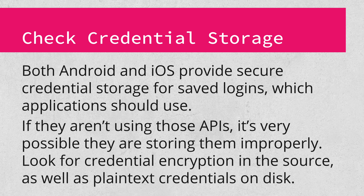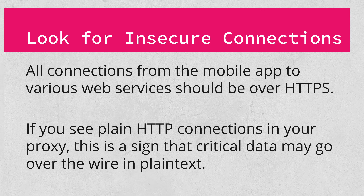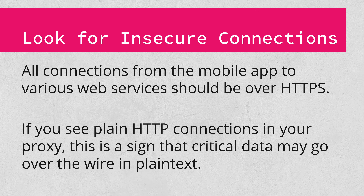Next, check to see how credentials are stored. If it's possible to save credentials used to talk to a server, the application should be using the system APIs — Keychain on iOS and Smart Lock on Android — to store those securely. Often these will either be stored on the file system in plain text or poorly encrypted. Also look for insecure connections. Essentially all connections from the mobile app to web services should be via HTTPS. If you see plain HTTP connections hitting your proxy, this is almost certainly a bug, or at least hints very strongly that one will exist.